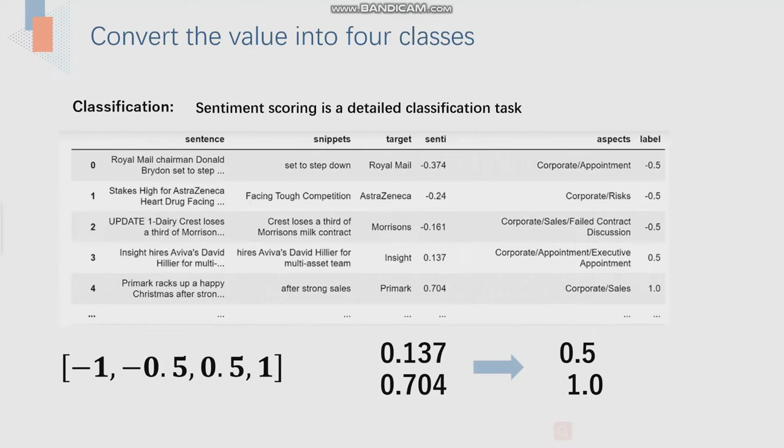Also, we need to know that sentiment score is a detailed classification task. We can even convert the values into 100 kinds of classes. However, the more classes, the less likely it is to classify correctly. Therefore, we convert the value into 4 classes. It is more than 2 classes and not too many classes, so it is very suitable.